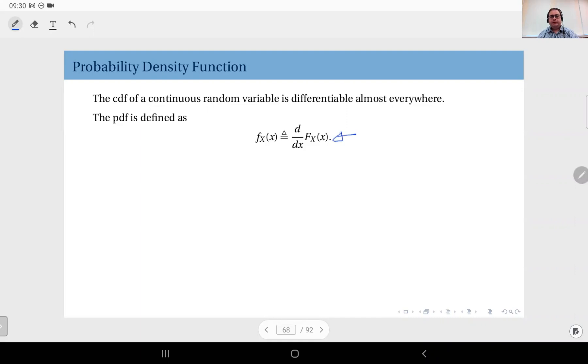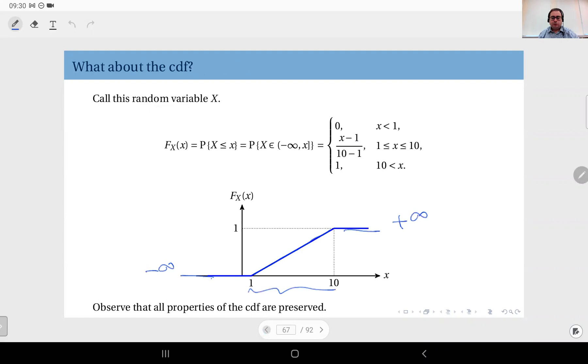Observe that the CDF, especially of a continuous random variable, is differentiable almost everywhere. What does almost everywhere mean? Well, you look at the examples that we have just seen - this function is a continuous function, it's continuous everywhere, but it's not differentiable everywhere because it has breaking points here.